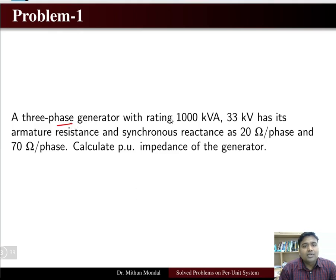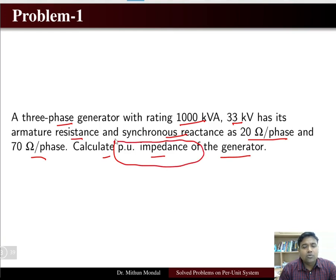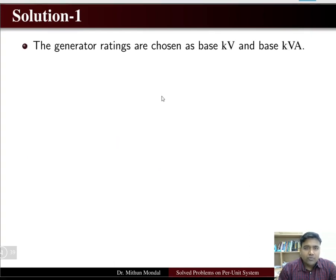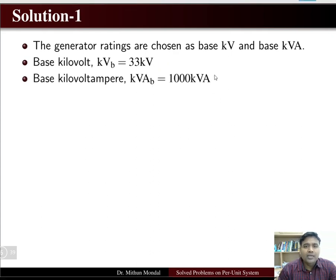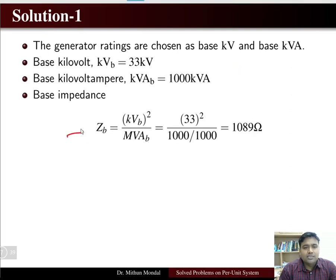Problem number one: we have a three-phase generator rated 1000 kVA, 33 kV. Its armature resistance and synchronous reactance are 20 ohm per phase and 70 ohm per phase respectively. Calculate the per unit impedance of the generator. We first choose the generator rating as the base, so base kV is 33 kV and base kVA is 1000.